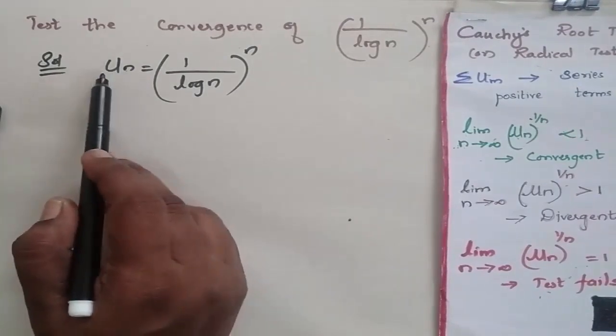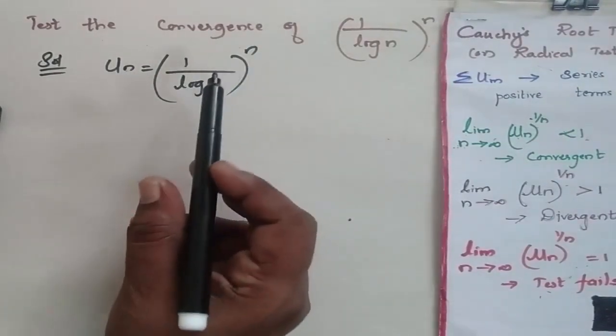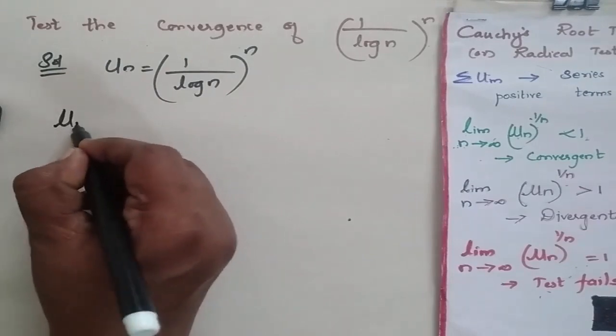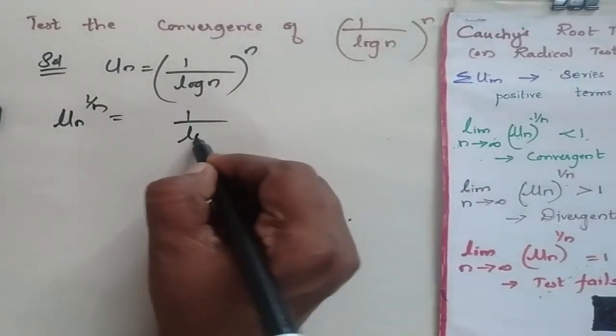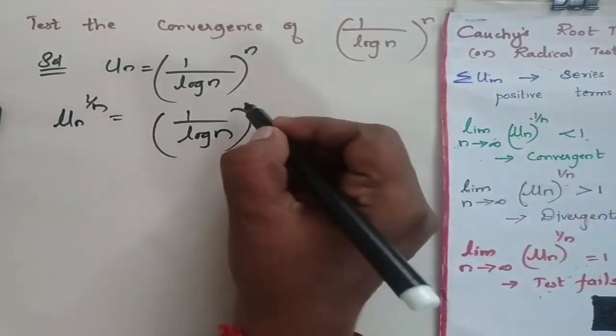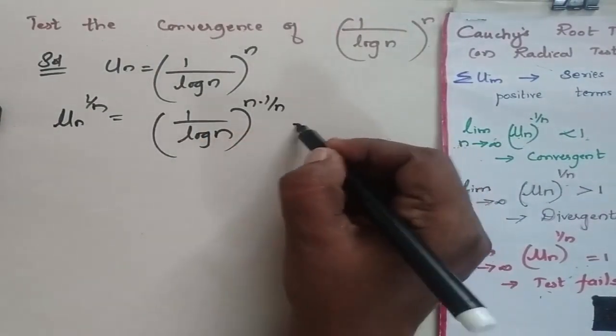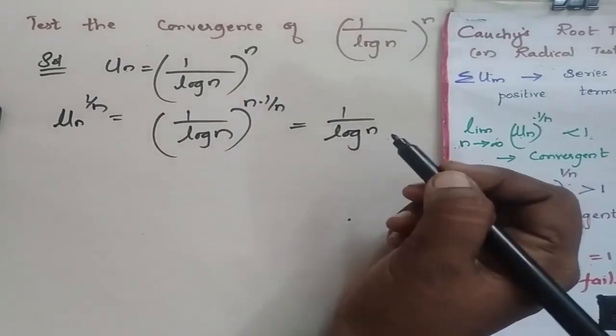Now here I have my u_n as 1 by log n to the power n. So u_n to the power 1 by n is equal to 1 by log n to the power n into 1 by n. This is equal to 1 by log n.